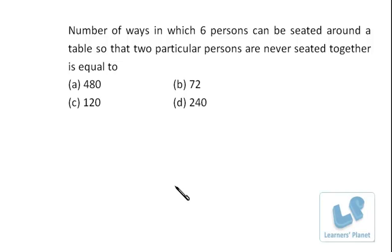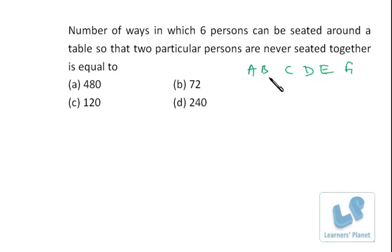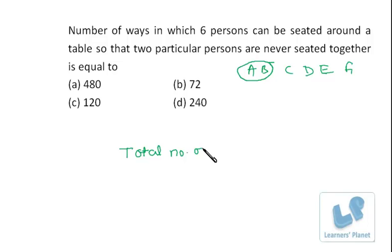Next question: the number of different ways in which six persons can be seated around a table so that two particular persons are never seated together. I assume these two persons to be A and B. Apart from A and B, there are four more persons: C, D, E, and F. I take a reverse approach — I find the total number of arrangements and from that deduct the arrangements when A and B are together. Since six persons are sitting around a table, it is a circular arrangement, and the total number of ways is (n−1)! = 5! = 120.